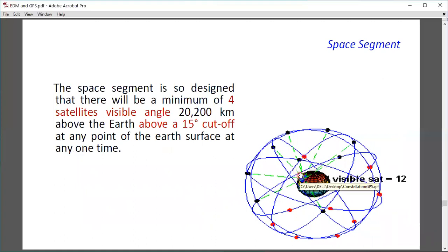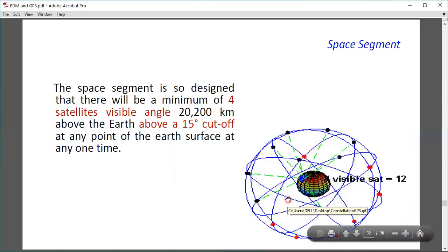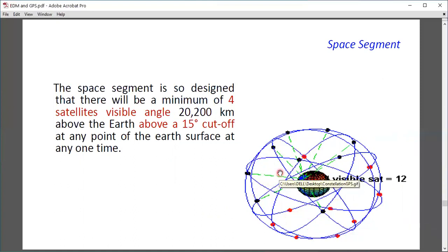In any place, at any time, always, minimum 4 to 6 satellites are visible out of the 31. If you look at this illustration, you can see satellites visible at different locations. Minimum 4 to 6 satellite signals will be visible at any one place.